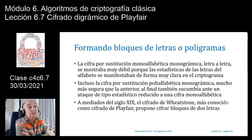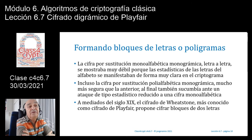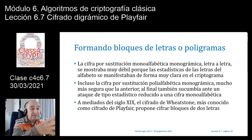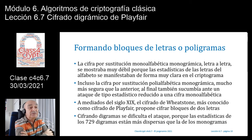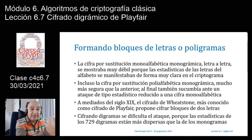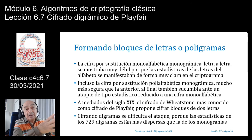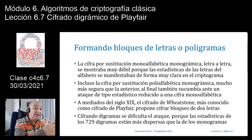La solución comienza a pensarse a mediados del siglo XIX: el cifrado de Wheatstone, más conocido más adelante como el cifrado de Playfair, propone cifrar bloques de dos letras. Será el primer cifrador de tipo bigrámico o digrámico que existe. Cifrando digramas, vamos a dificultar el ataque estadístico, porque ahora ya no son las estadísticas de las 27 letras del castellano, sino que tenemos ahora 27 por 27, es decir 729 digramas, desde el digrama AA hasta el digrama ZZ.